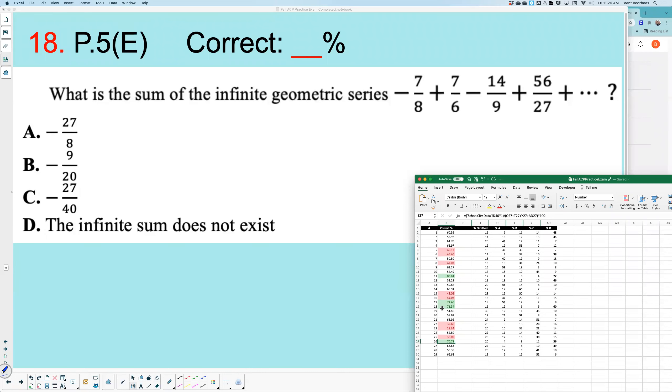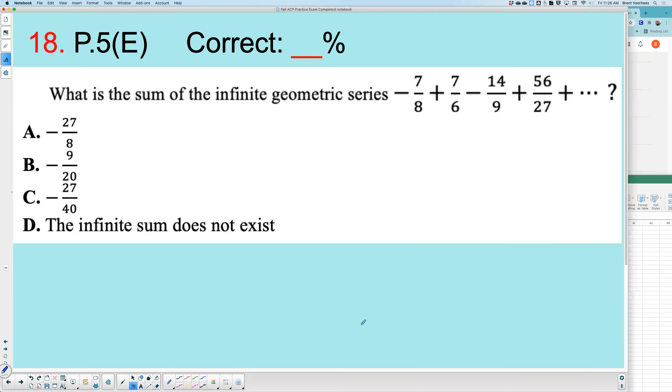And now we're going to look at number 18. That was also 71%, so 71%. It says here, what is the sum of this infinite geometric series? Well, this one really helps us out. It tells us it's infinite.